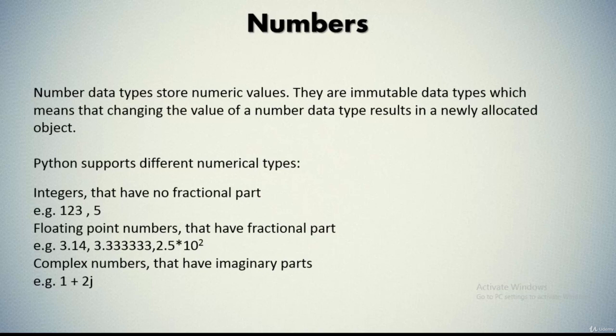Python basically supports four different numerical types. The first being int, which are signed integers — often called just integers or ints. They are positive or negative whole numbers with no decimal point. Second, we have long integers, also called longs. They are integers of unlimited size, written like integers and followed by an uppercase or lowercase L.